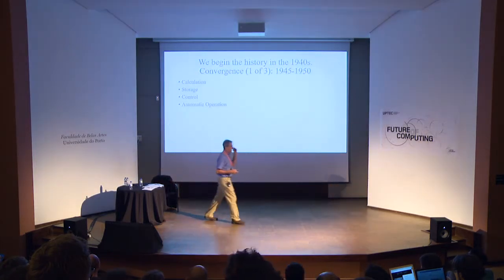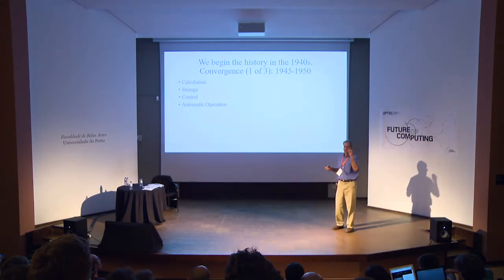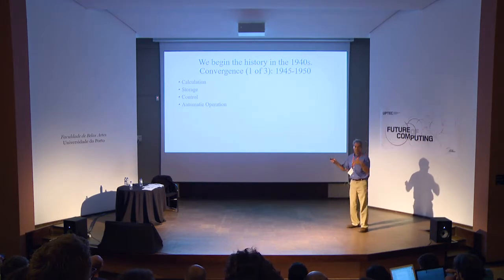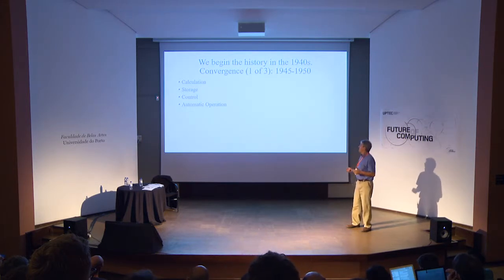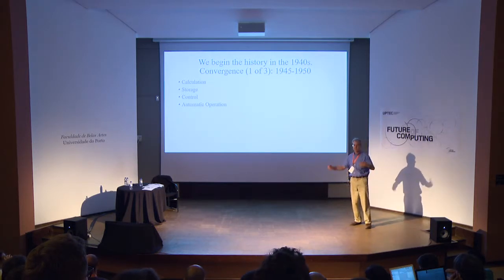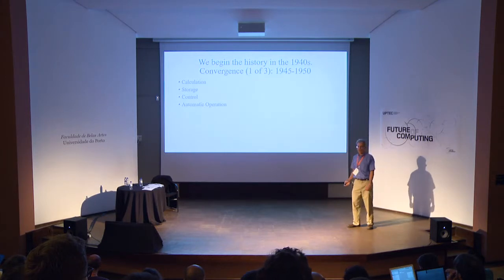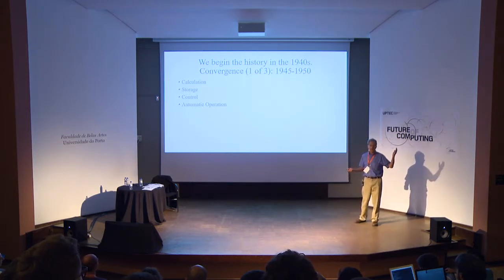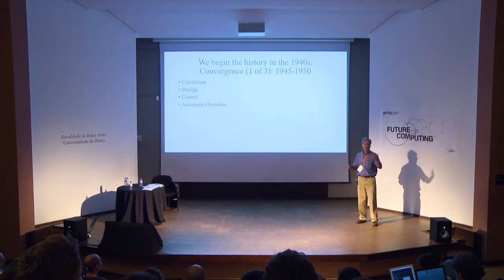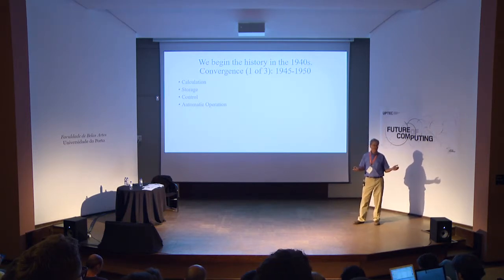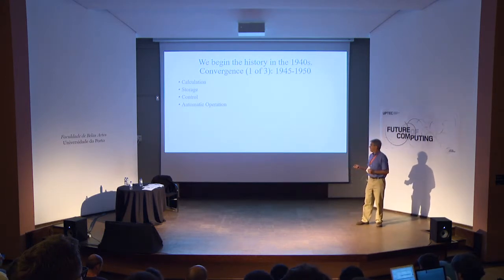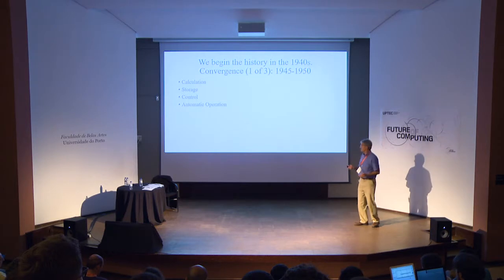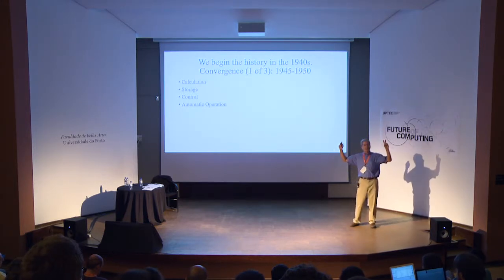Why am I beginning the history of computing in the 1940s? Because a computer is not just calculating — it's a convergence of different activities. Calculation is one, but computers also store information, as we saw in this morning's lecture with massive cloud and RAID servers. Computers are also used for control: modern aircraft are flown by computer, they control hydroelectric power plants, drones, and so forth.